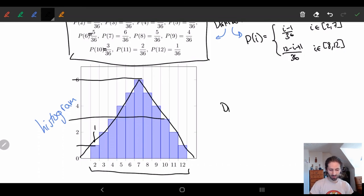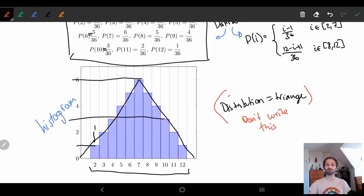So distribution equals triangle. P.S. Don't ever write this. You will lose points. But yeah, it basically looks like a triangle. So that's where this kind of comes from.